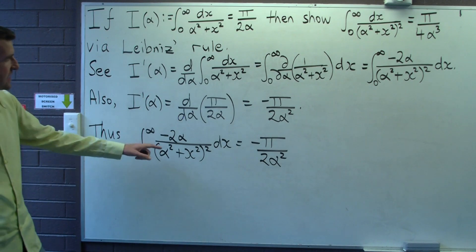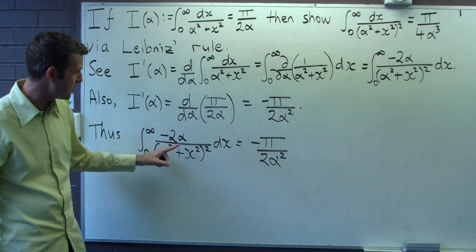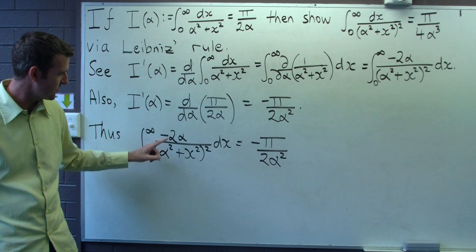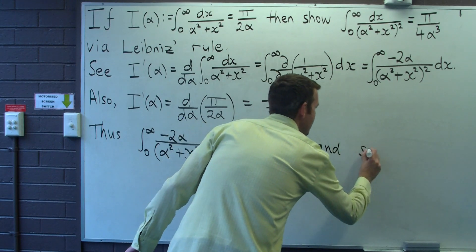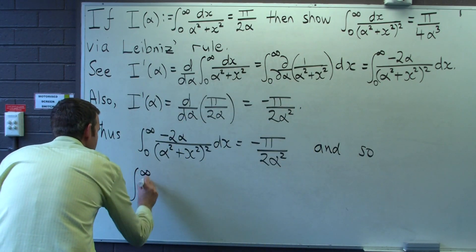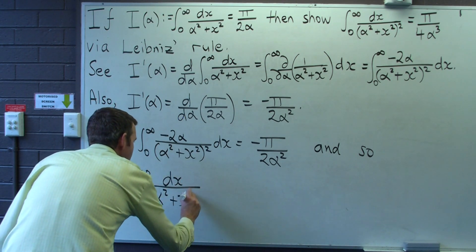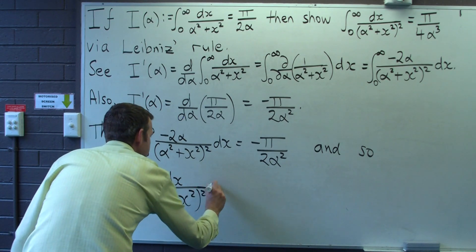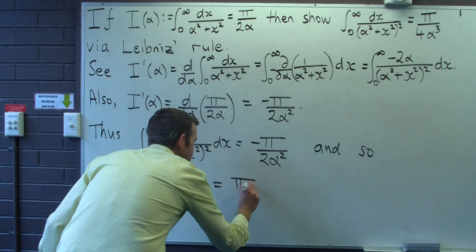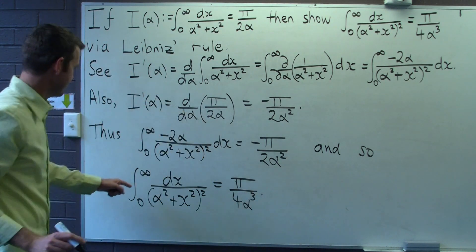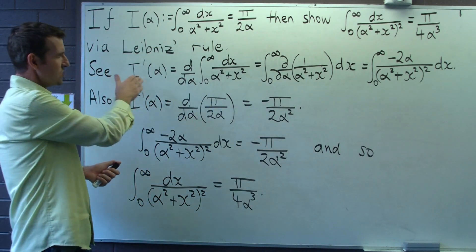All we need to do now to get the identity we want is divide both sides by -2α. Remember, x is the dummy variable here, so we can take -2α out and divide both sides. The minus signs cancel out and we get 4α³ on the bottom. If you look closely, this is exactly the identity we wanted to prove.